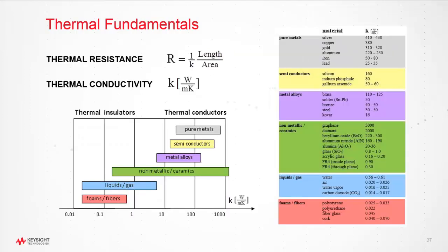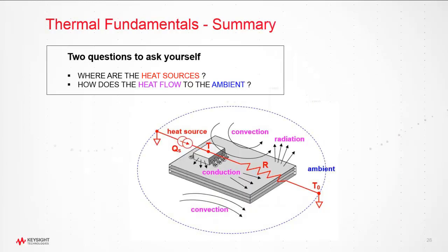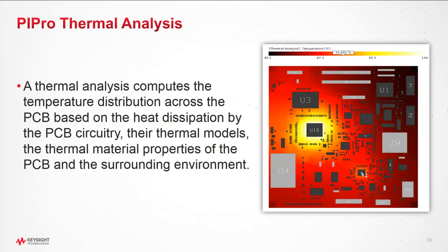This picture shows some common materials and their thermal conductivity. Pure metals have the best thermal conductivity, helping to cool down the device temperature, whereas foams and fibers are the worst as they impede heat flow. When thinking about thermal problems, two questions to ask yourself: where are the heat sources, and how does the heat flow to the ambient?